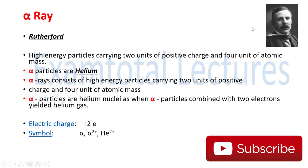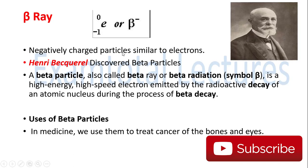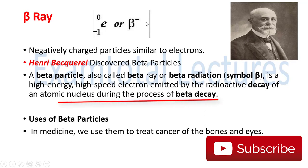Next is the beta ray. Beta rays were discovered by Henry Becquerel, who also described radioactivity. Beta rays are negatively charged — whereas alpha rays are positively charged, beta rays are negatively charged particles, i.e., electrons. They are also called beta particles or beta radiation. The symbol is beta (e⁻¹). They are high energy, high speed electrons emitted by the radioactive decay of an atomic nucleus, known as beta decay.